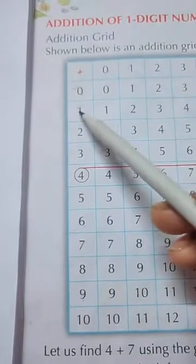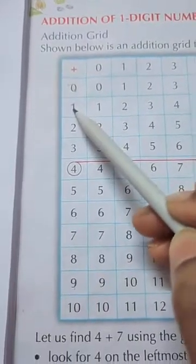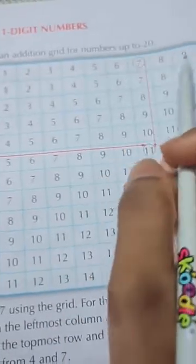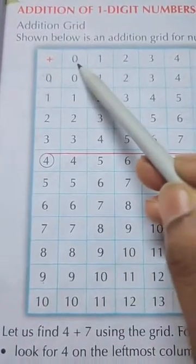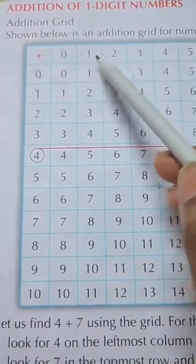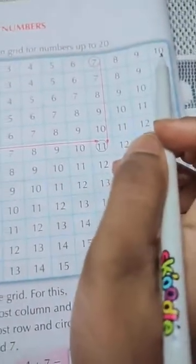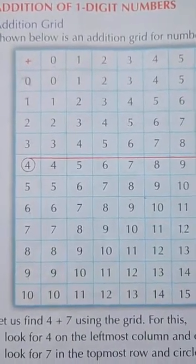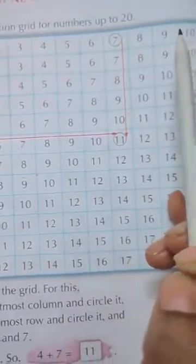In the same way, we take the next number, 1, and add it with all the numbers in the row: 1+0=1, 1+1=2, 1+2=3, and so on until 10. Then we take the next number, 2, and add all the numbers in the first row through 10.